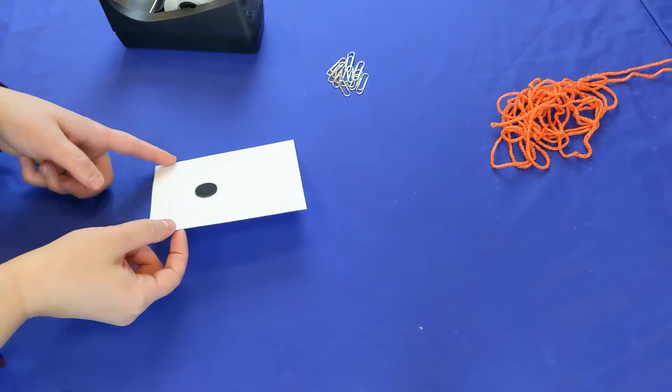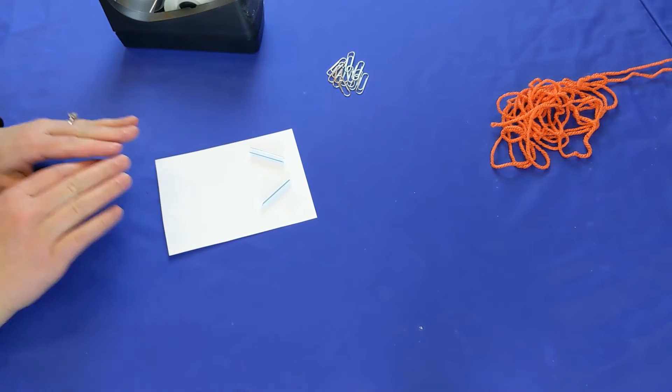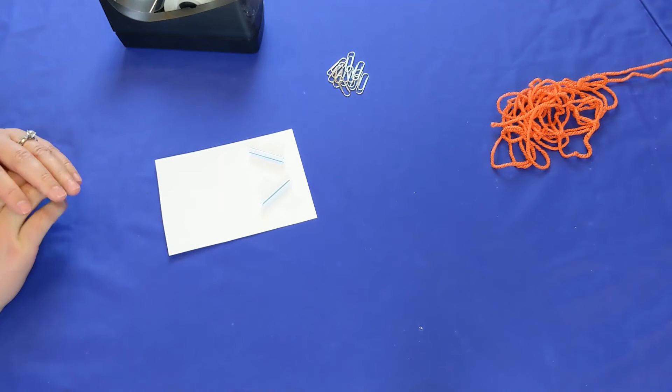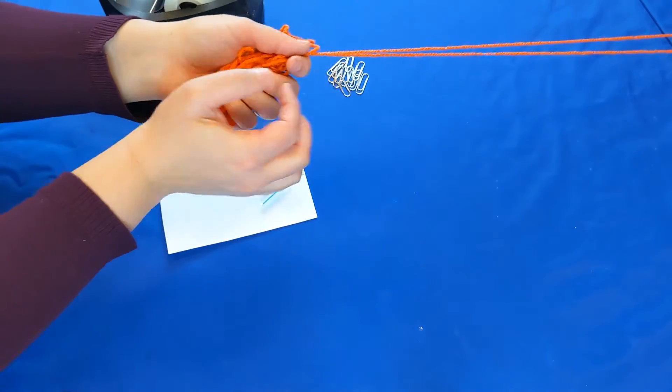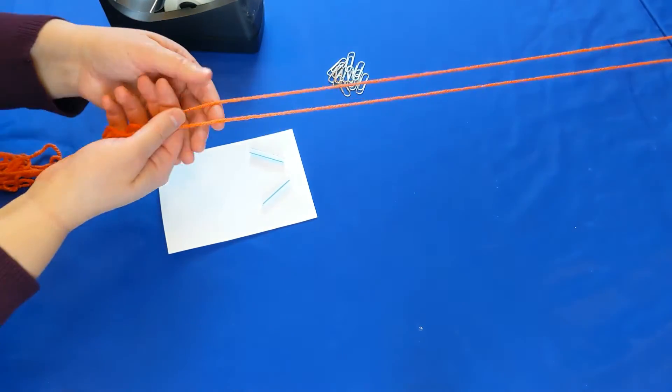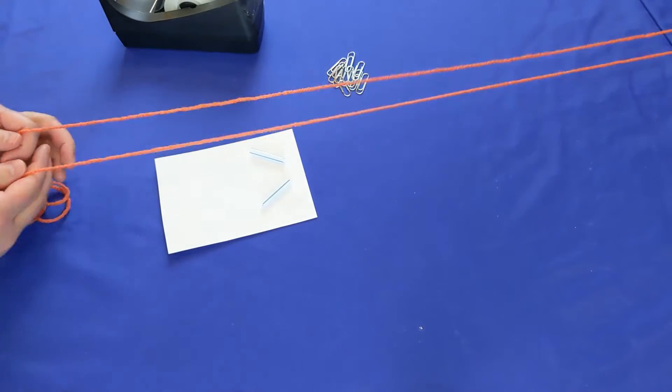Now we can flip it back over so these straws are facing up. The next step is to take our string and loop the string around a table or a chair leg. I've done that earlier here. Take your string and you can see you want your string to be about an inch or two apart. That's how this works best.